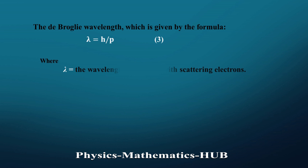Here λ is the wavelength associated with the scattering electrons, and h is the Planck constant, which is equal to 6.626 × 10⁻³⁴ joule seconds.